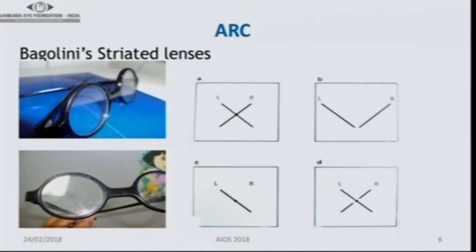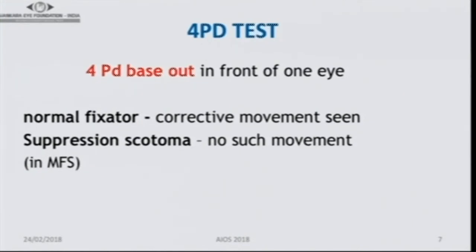Bagolini's striated lenses can help determine whether there is binocular single vision, dominance in either eye, suppression, or a central scotoma. The four-prism diopter test is a simple but useful test. In a normal person with binocular single vision, when you place a 4 prism diopter prism base-out in front of one eye, you see a corrective refixation movement. This does not occur in monofixation syndrome due to a suppression scotoma at the center.